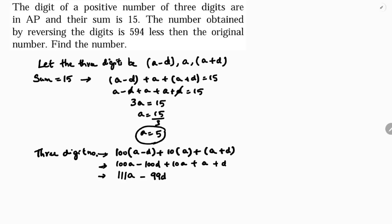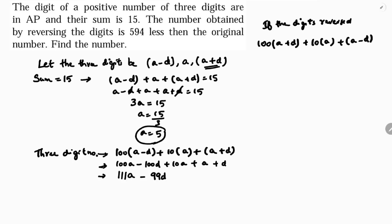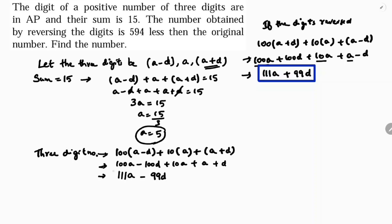Now if the digits are reversed, the hundreds digit becomes a + d, tens digit is a, and units digit is a - d. So the reversed number is 100(a + d) + 10a + (a - d), which simplifies to 111a plus 99d.